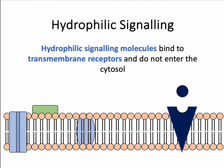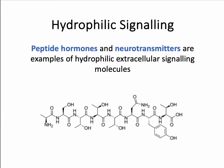When we look at hydrophilic signalling, the main difference is that hydrophilic signalling molecules are not able to move through the phospholipid bilayer. Instead, they have to bind to what we call transmembrane receptors, so they do not actually enter the intracellular space — the cytosol. They bind to a receptor, and that receptor is then going to have to pass the signal into the cell a slightly different way. Any peptide hormones or neurotransmitters are examples of these hydrophilic extracellular signal molecules, and we're calling them extracellular because they bind to receptors outside the cell membrane and send a signal in.